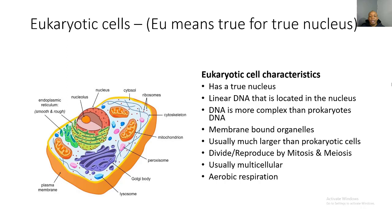The DNA of eukaryotic cells is more complex than prokaryotes' DNA. They have membrane-bound organelles, meaning each organelle has a membrane that protects it and allows it to perform its specific function without other organelles interfering. Eukaryotic cells are much larger than prokaryotic cells.